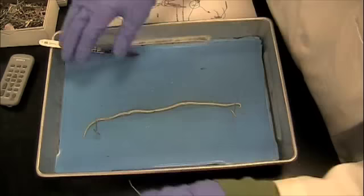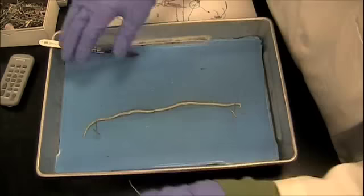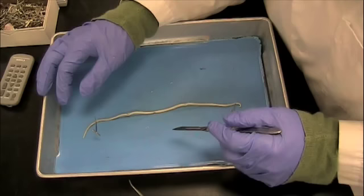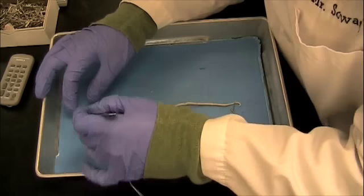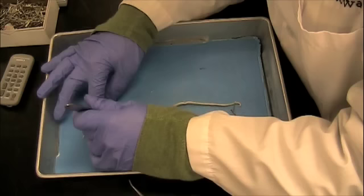This is a very simple dissection because Ascaris is a very simple organism. All we're going to do is make an incision down the Ascaris, opening it. I don't want to cut too deep and cut through the internal organs so I'm just going to make a shallow incision right along the dorsal side.